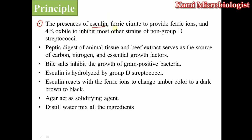Let's see the main functions of these ingredients. First of all, we have esculin as well as ferric citrate. The presence of these two ingredients provides ferric iron and ox bile respectively. These two ingredients mostly inhibit other types of bacteria, and due to this, Streptococci can easily grow.